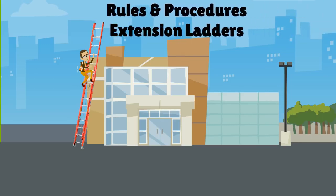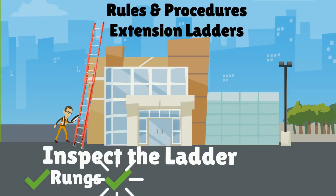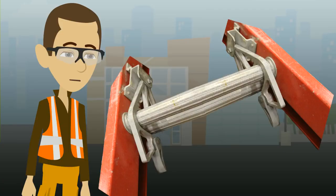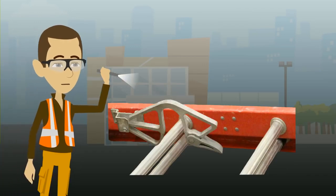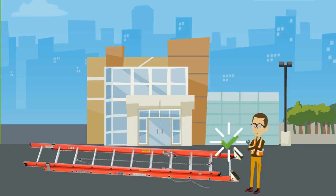These locks function as brackets and prevent the fly from sliding down once it supports the climber's weight. Let's look at the rules and procedures that should be followed when using extension ladders. Before each use, inspect the ladder. Ask yourself: Are the rungs in good condition? Do the ladder locks function correctly? Does the ladder have anti-slip feet, and if so, are they in good condition?